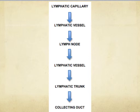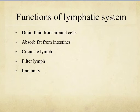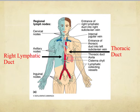The functions of the lymphatic system are to drain fluid from around the cells, absorb fat from the intestines through the villi, circulate the lymph, filter the lymph, and aid immunity. The lymph nodes are located under the neck, the side of the face, armpits, groin, and internally in the abdomen.